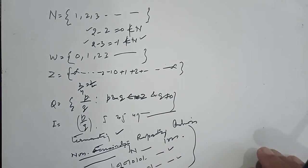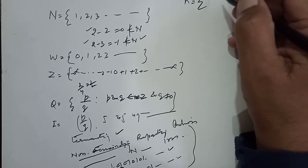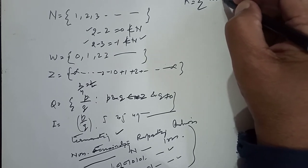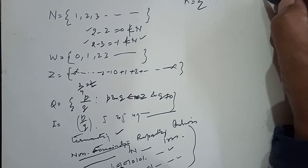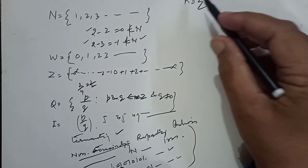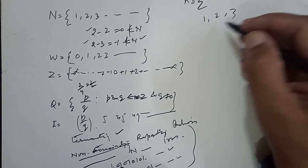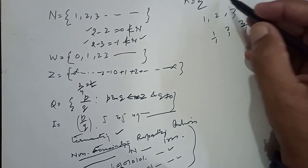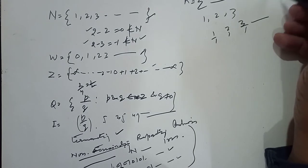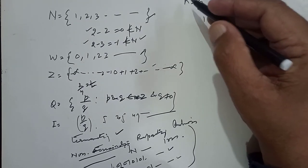Now we define the real number line. First of all, what are real numbers? A set of numbers which are either rational or irrational are called real numbers. Because natural numbers like 1, 2, 3 are natural numbers, but they can also be written as 1 upon 1, 2 upon 1, 3 upon 1, so they can also be said to be rational numbers. So the set collection of rational and irrational numbers combined together gives rise to a new set, what is called the real number system. This is universal in nature.